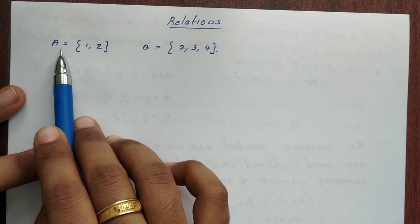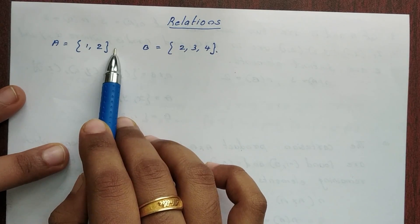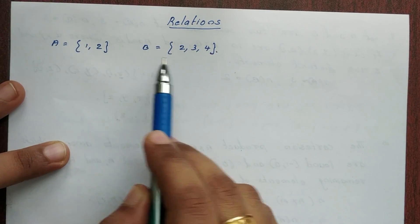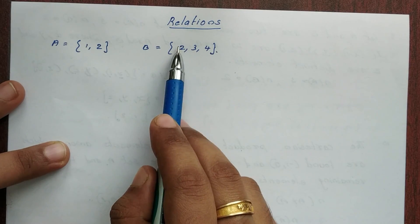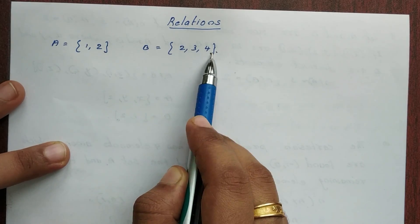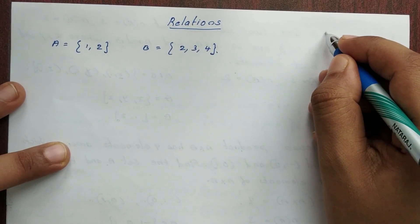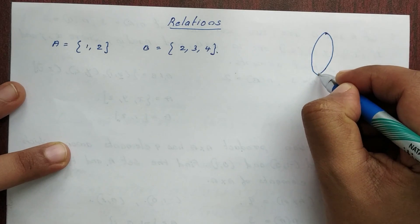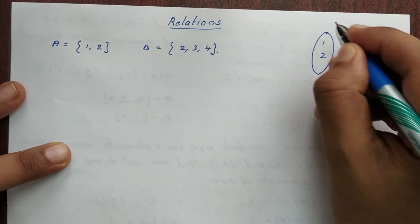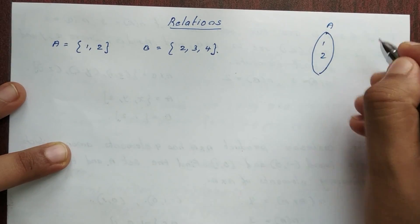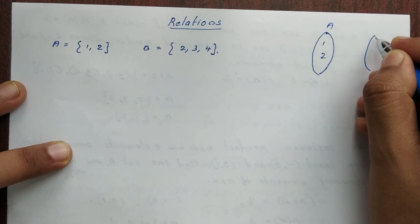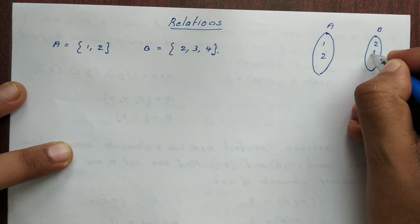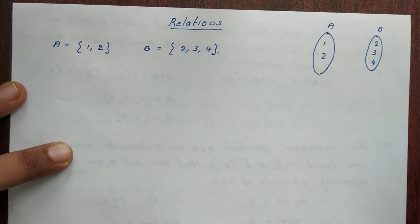So I will consider two sets. Set A is {1, 2} and B is {2, 3, 4}. These are two sets. I will represent the diagram which is {1, 2}, that is set A, and this is set B, that is {2, 3, 4}.